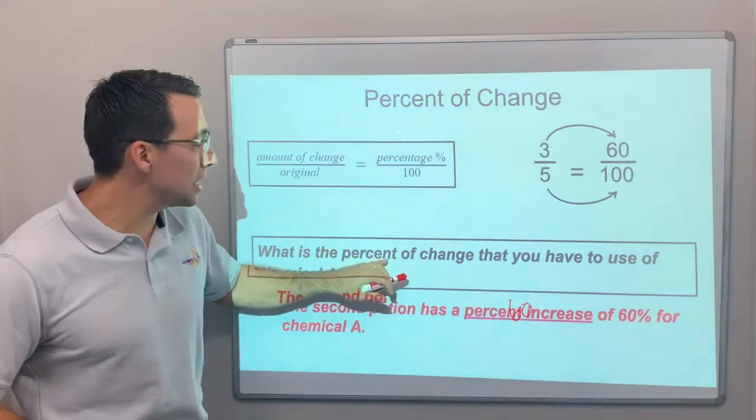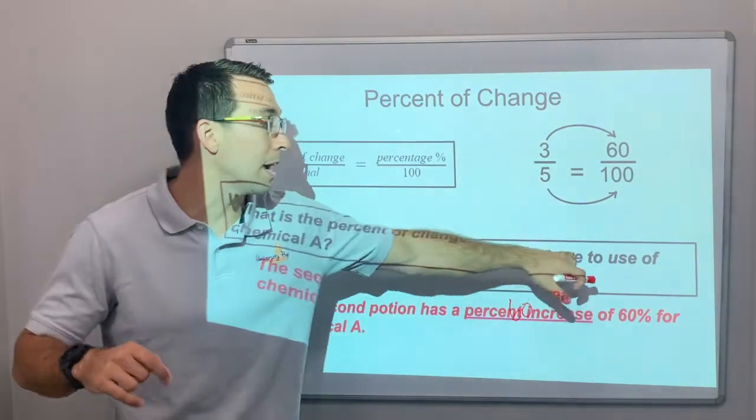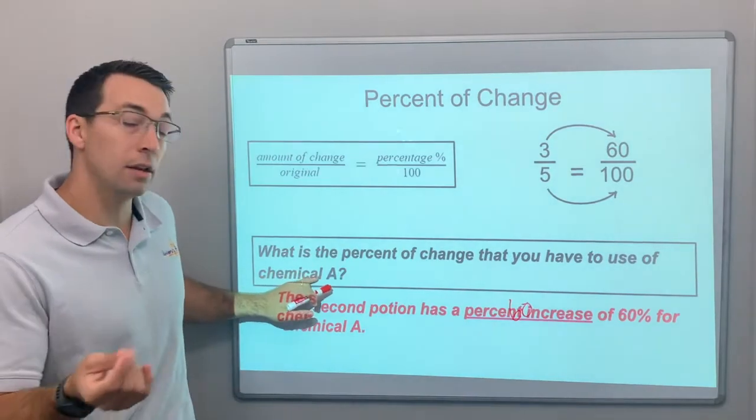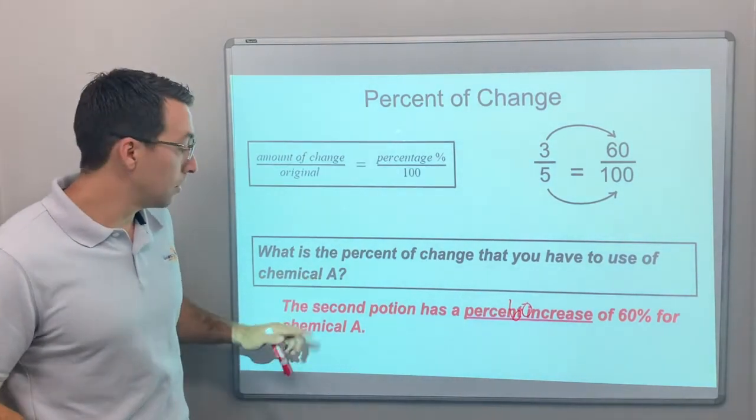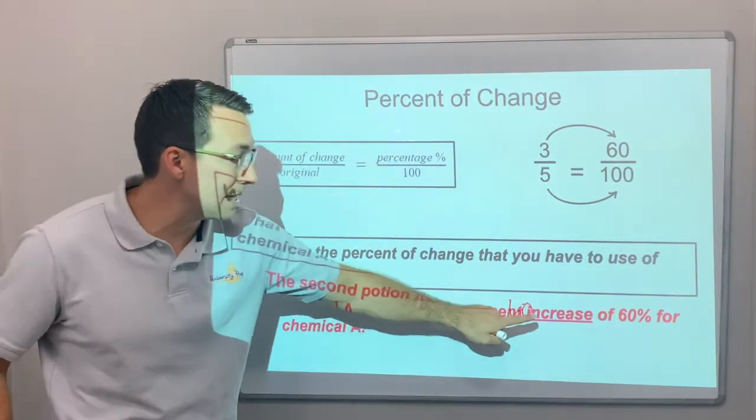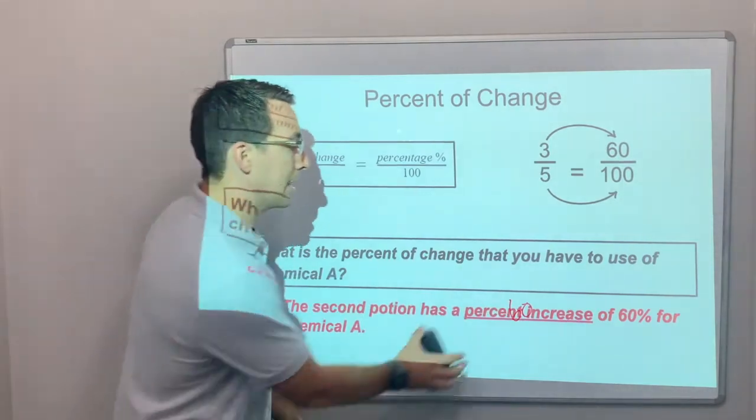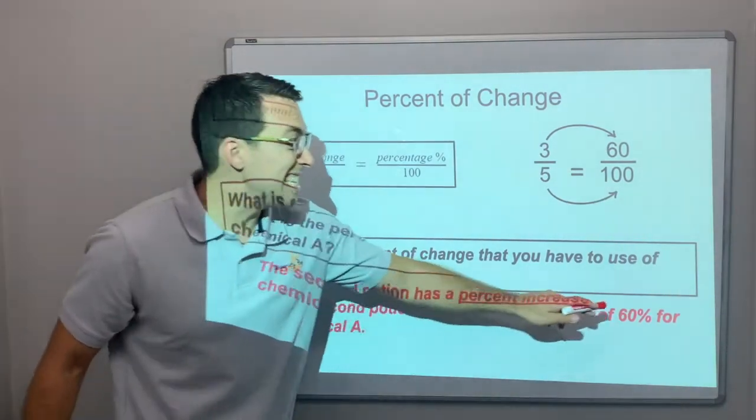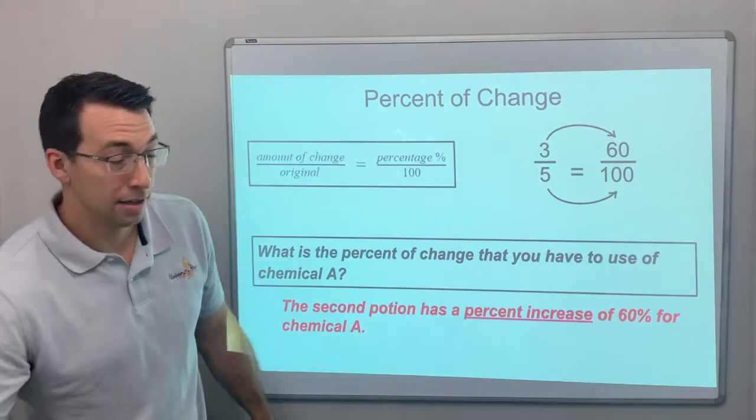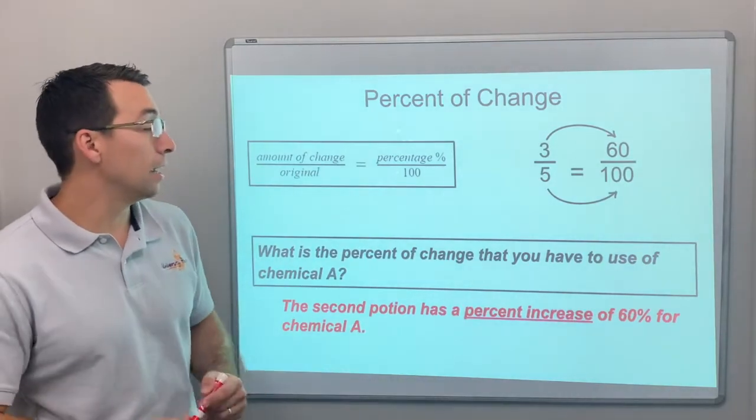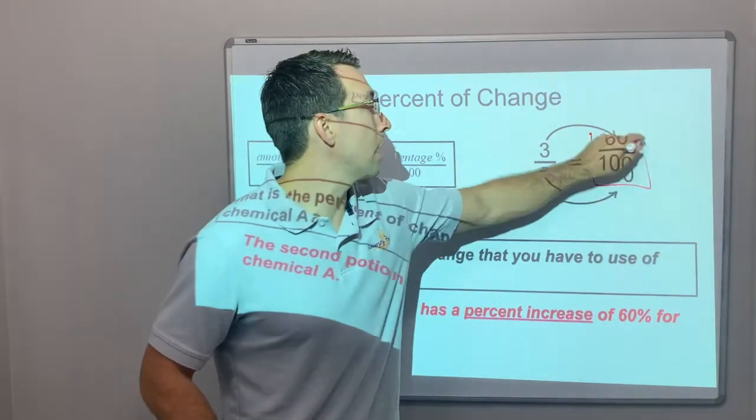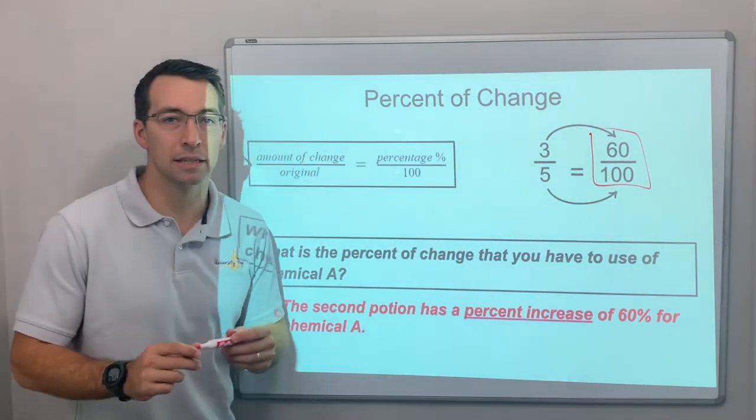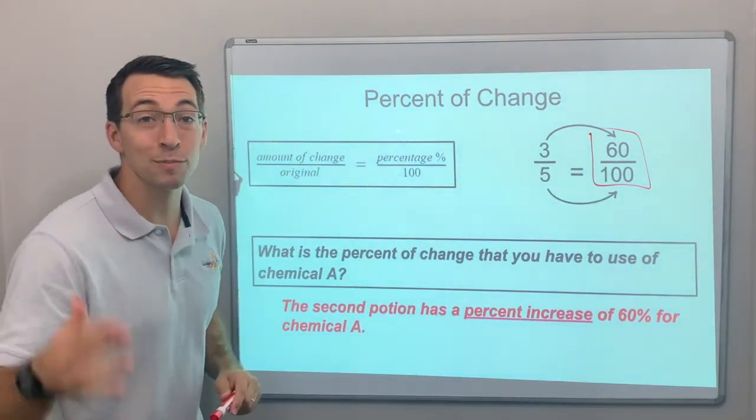So what is the question? Go back to the question. What is the percent of change that you have to use of chemical A? Well, the second potion has a percent increase of 60% for chemical A, because 60 out of 100, that's 60%.